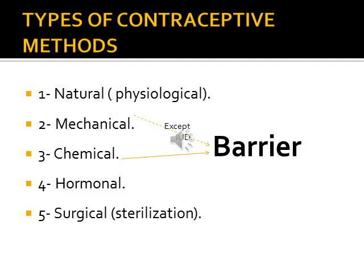Types of contraceptive methods: we have many types. First, natural or physiological methods. Second, mechanical methods. Third, chemical methods — both mechanical and chemical are grouped as barrier methods, except for the IUD. The fourth type is hormonal contraception, either as pills, injections, or subdermal implants. And lastly, surgical options in the form of sterilization.